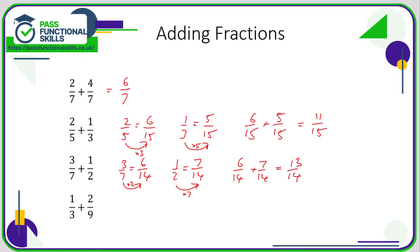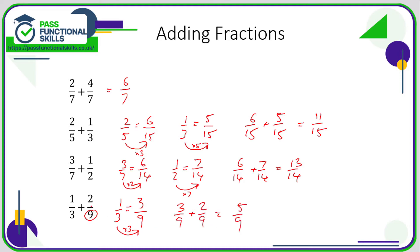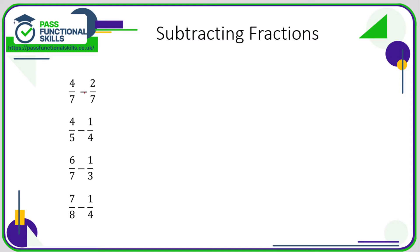In the next example we again have two different bottom numbers. Looking at the bigger one, nine — does three go into nine? It does. So we don't need to change two ninths; we just convert one third into ninths. Three times three is nine, so times the top by three — one third becomes three ninths. So it's simply three ninths plus two ninths, which equals five ninths. This one is easier because we only need to convert one fraction.